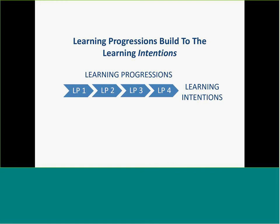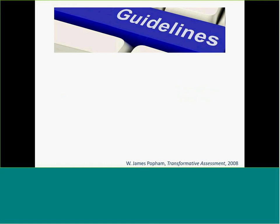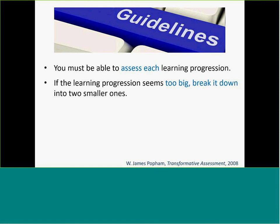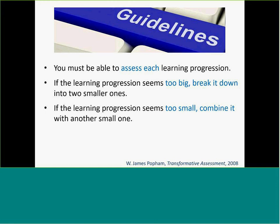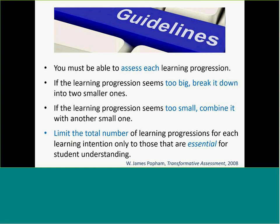I realize this may sound a little abstract, so I want to give you a couple examples. Jim Popham says you must be able to assess each learning progression. When you get a building block identified, we need to decide: is this critical for kids to achieve the more rigorous priority standard by the end of the unit? If it seems too big, break it into two smaller ones. Or maybe it's too granular — combine it with the one that goes with it. Try not to have too many; keep them limited to the ones that are essential for student understanding.